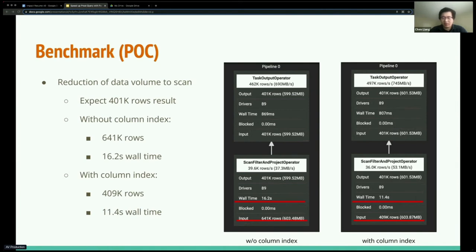Another way to put this is that the query is expected to return 401k rows. By reading 641k rows, it's reading 60% more rows than needed by the results. But with the column index, it only read 409k rows. This was only 2% more than what's really needed in the results. So this gave an insight of the efficiency improvement of reading Parquet tables using the index.